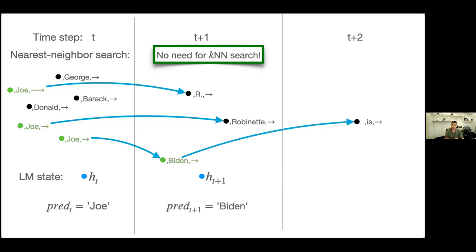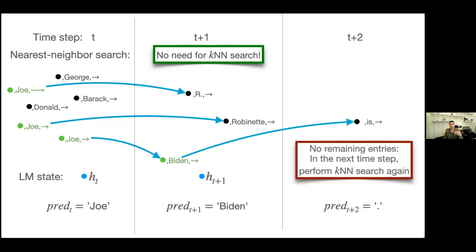At T+1 we don't need to perform the expensive KNN search because we already have nearest neighbors from the previous step, obtained by following pointers. After predicting Biden at T+1, we follow those pointers again. At T+2, if the prediction is a dot but none of the existing nearest neighbors suggested 'dot' — the word came from the base language model — then we have no remaining entries to follow pointers from. So we perform KNN search again at T+3, but we saved the expensive search at T+1 and T+2.